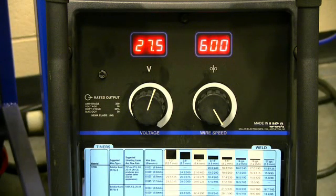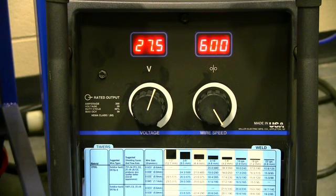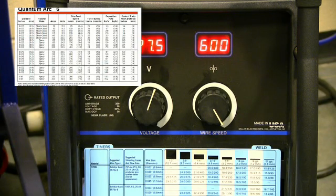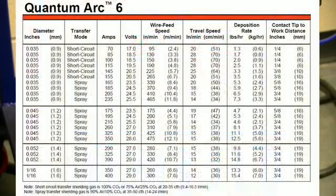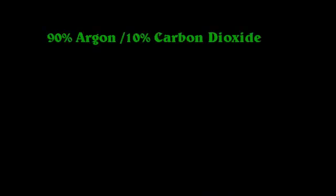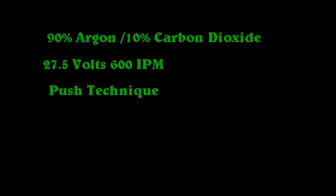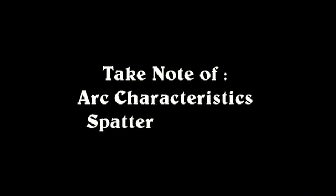As far as setting the correct welding parameters, I'm going to start at 27.5 volts and 600 inches per minute. I know these are good parameters based on experience, but if you're not sure, the best thing to do is check with the wire manufacturer's data sheet, which always has a good table of starting parameters. Now that I have the machine set, I'm going to use a push technique, which is recommended for spray transfer, and take note of the arc characteristics including the spatter visible.